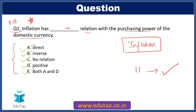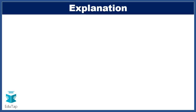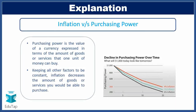Resuming back, let's move to our explanation section. This question is about the relation between inflation and purchasing power. Inflation is a general price rise in the economy due to excessive supply of money in the money supply chain. Purchasing power is the value of currency expressed in terms of the amount of goods and services that one unit of money can buy.